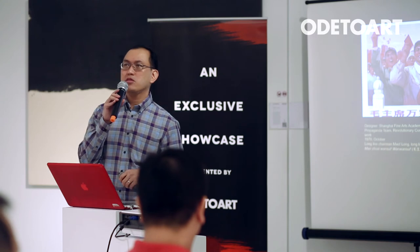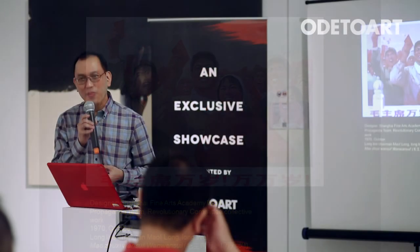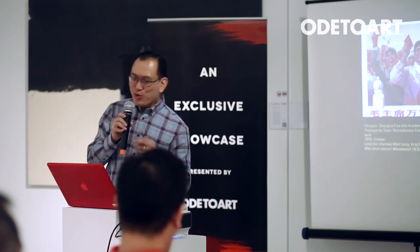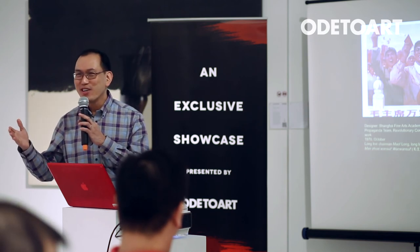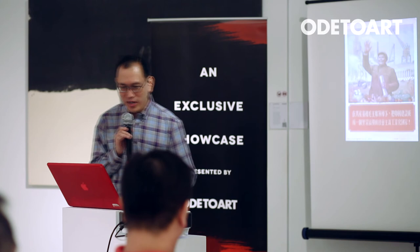These are the many thousands of posters created during Mao's time — and people actually collect these posters today. Many of these posters were created by very esteemed and established artists. There was actually a propaganda team devoted to creating these posters. Such images are quite common — you see smiling people or sometimes determined people, and what do they have in their hands? They always have the little red book — the quotations of Mao Zedong. The caption says 'Long live Chairman Mao.'